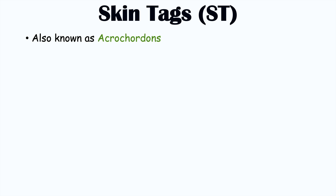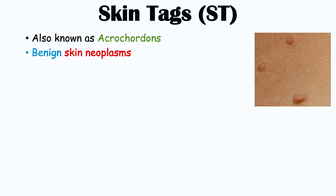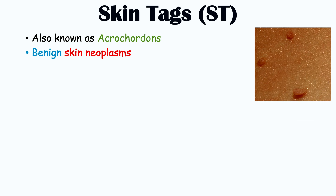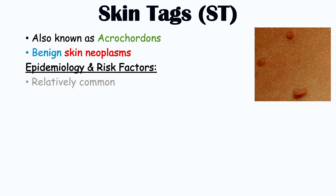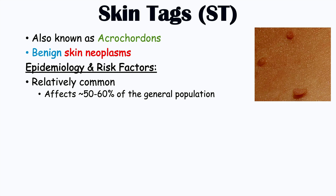Skin tags are also known as acrochordins. They are benign skin neoplasms. Skin tags are a relatively common skin finding, affecting approximately 50 to 60% of the general population.